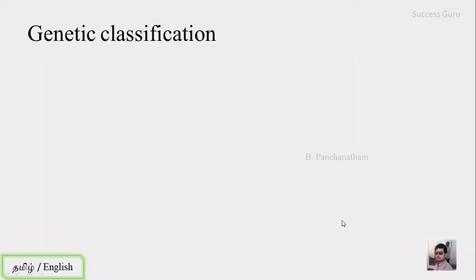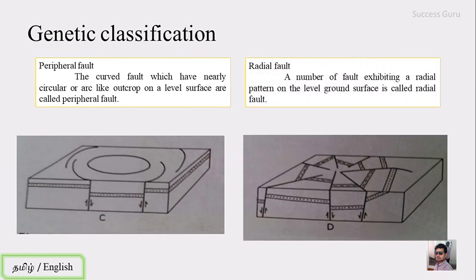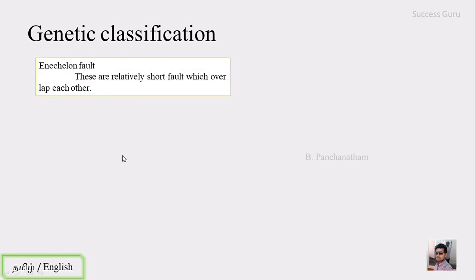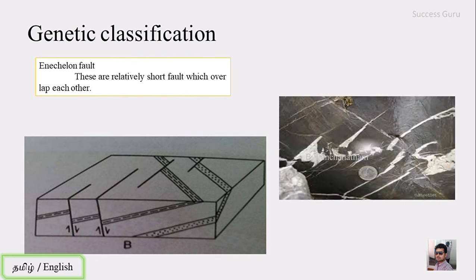The peripheral fault is a curved fault which has a nearly circular outline on a level ground. The radial fault shows a radial pattern — in plan view, the faults radiate from a central point. The last type in this genetic classification is the en echelon fault, where relatively short faults overlap each other. Overlapping of faults leads to the en echelon fault pattern.